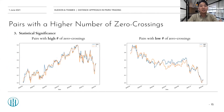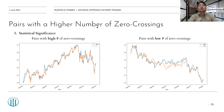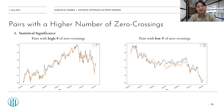Here are some examples of two pairs — one with a higher number of crossings and the other with a lower number of crossings. As you can see, the plot on the left side, which has a higher number of zero crossings, has a lot more crossings than the right side.